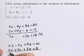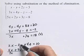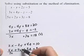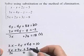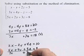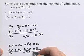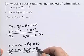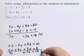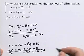2x plus 5x is 7x. Negative 2y plus 2y is 0. 4z plus 3z is 7z. And 10 plus 8 is 18. We call that our new equation 3: 7x plus 7z equals 18.